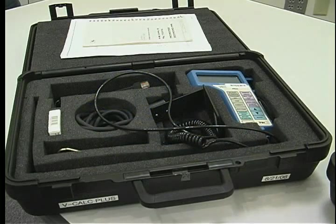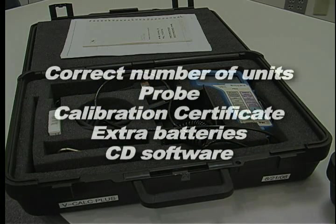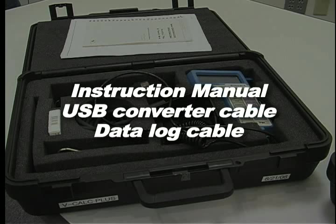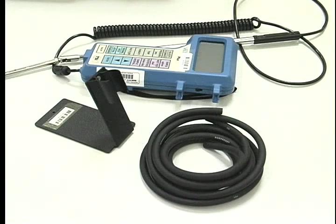When you first receive the shipment, confirm you have received everything you ordered. You should have the correct number of units, probe calibration certificate, extra batteries, CD software, instruction manual, USB converter cable, and data log cable on model 8386.